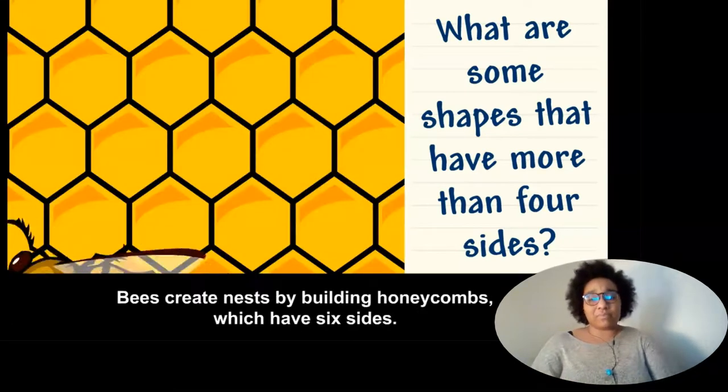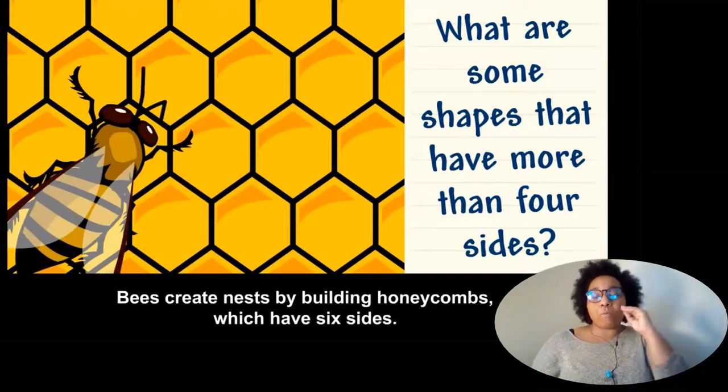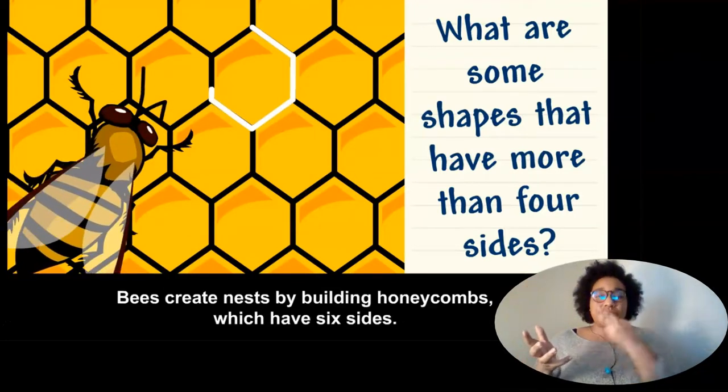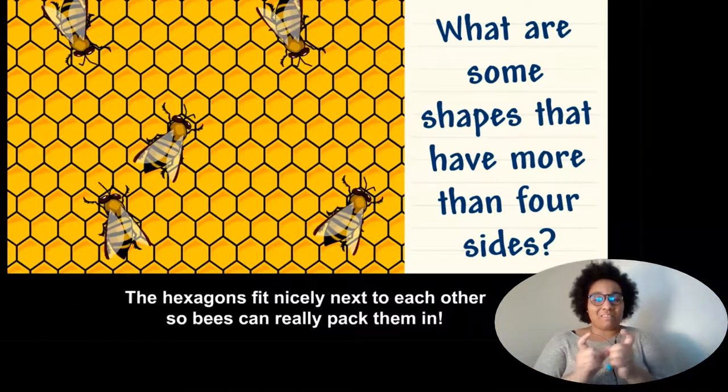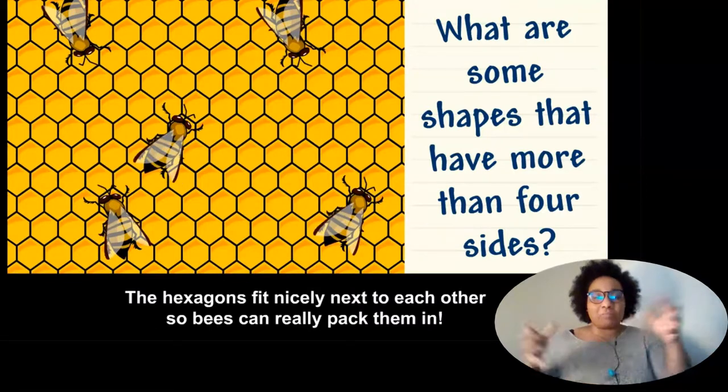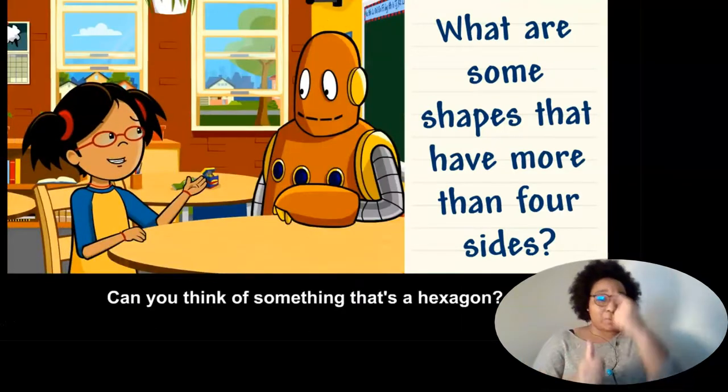Bees create nests by building honeycombs, which have six sides. The hexagons fit nicely next to each other, so bees can really pack them in. Can you think of something that's a hexagon?